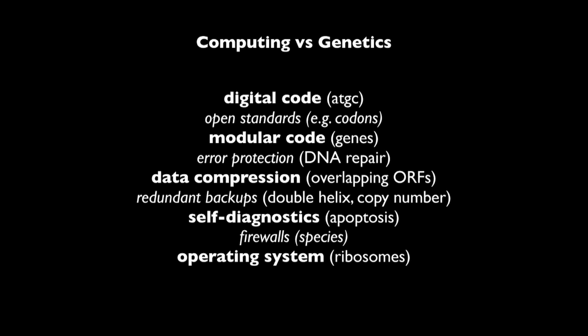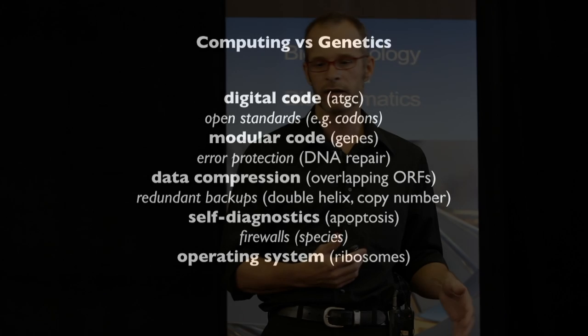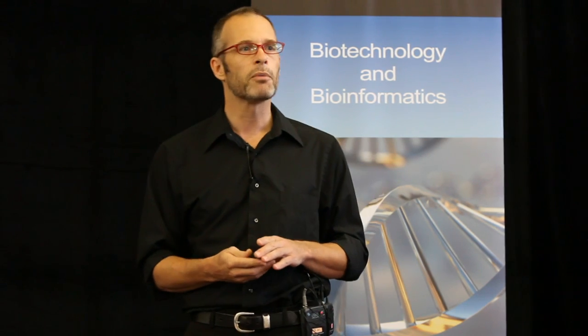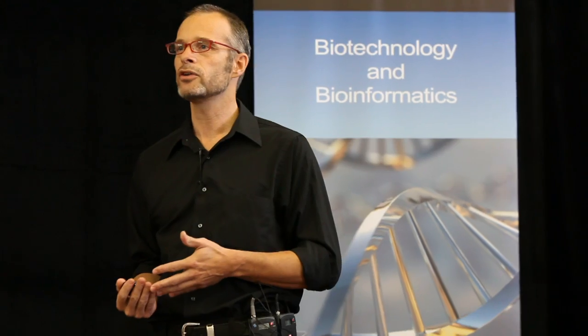There's error protection systems and data compression, and on and on. It's not really surprising when you think about it, because in engineering we want things to work faster and more efficiently and use less energy — and nature's trying to do the same thing too, just taking a roundabout way with different building materials to do it.